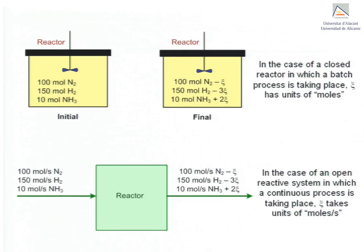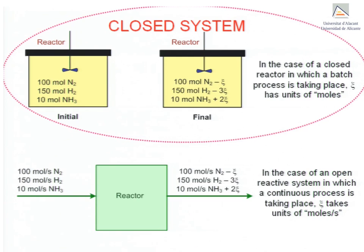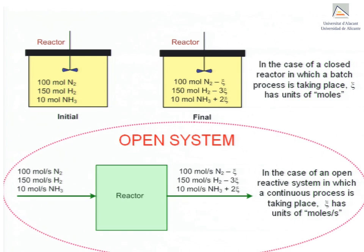We now consider two similar but rather different situations. The first one, at the top, is that of a closed reactor in which a batch process is taking place. It shows the number of moles present in the initial state as well as in the final state, calculated from the extent of reaction and the stoichiometric coefficients. In this situation the extent of reaction Xi has units of moles. The second situation, at the bottom, is that of an open system in which a continuous reactive process is taking place. The individual input and output molar flow rates are expressed in moles per second. The extent of reaction in this second situation will have moles per second as units.